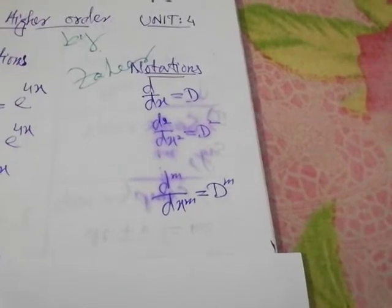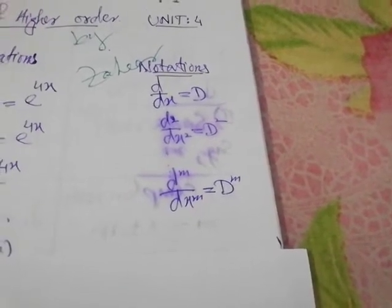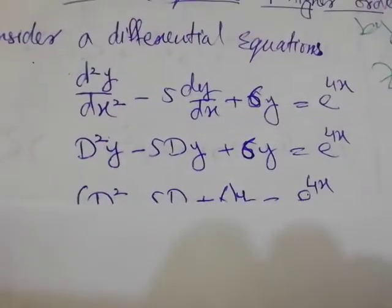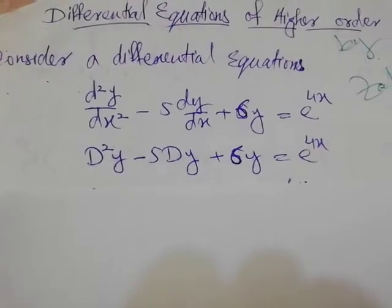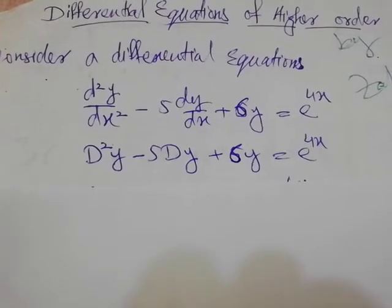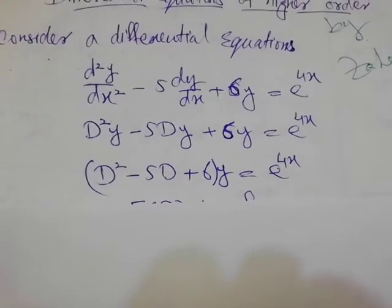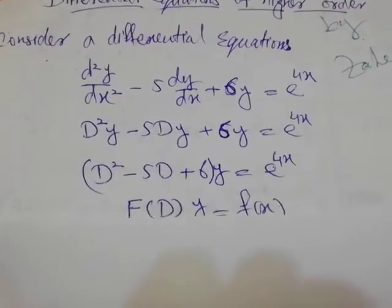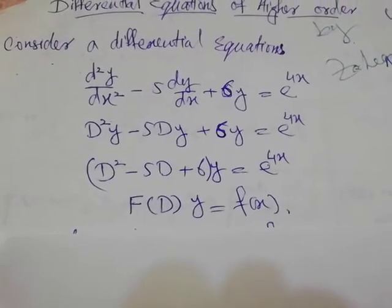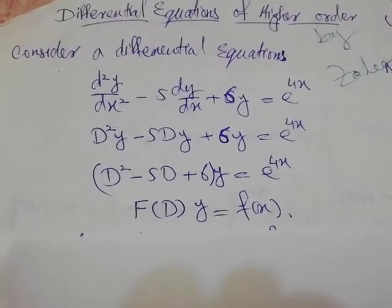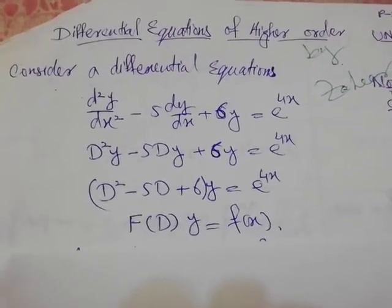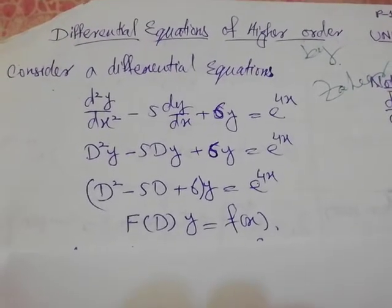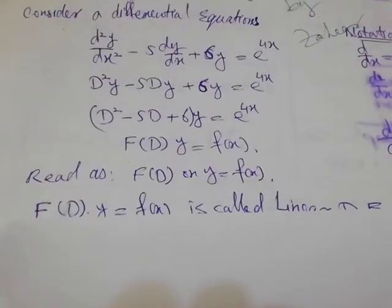If we write the given differential equation in operator form, it looks like D²y minus 5Dy plus 6y equals e raised to the power 4x. Taking y common, we read this as f(D) on y equal to f(x), where f(D) equals D² minus 5D plus 6 and f(x) is e raised to the power 4x.